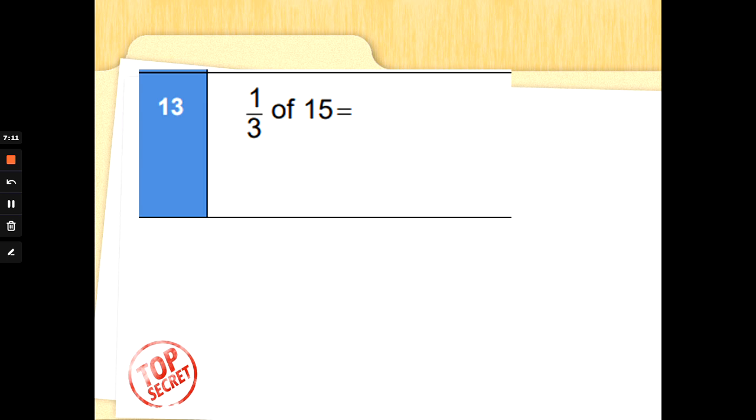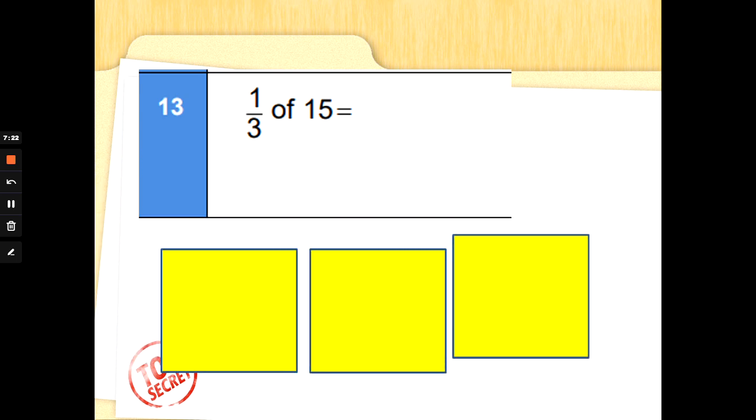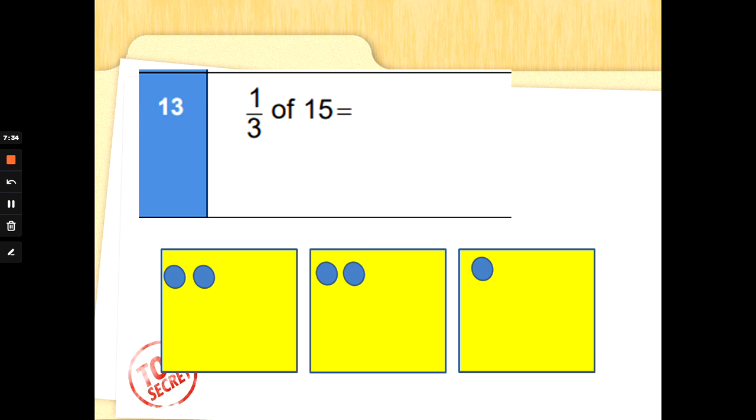What about 1/3 of 15? How many 3's make 15? Not confident with your 3's? That doesn't matter. We can draw 3 boxes and we can draw it out. Let's get going. Are we ready? Let's get sharing: 1, 2, 3, 4, 5, 6, 7, 8, 9, 10, 11, 12, 13, 14, 15. And we're checking for 1/3. How many dots in one box? Count carefully. 1/3 of 15 is 5. Well done.